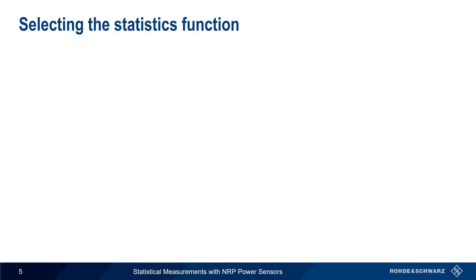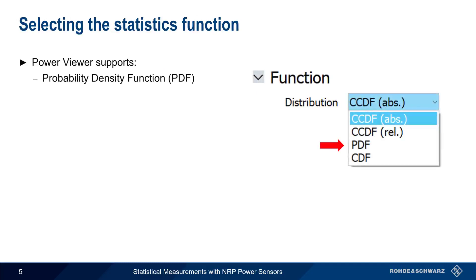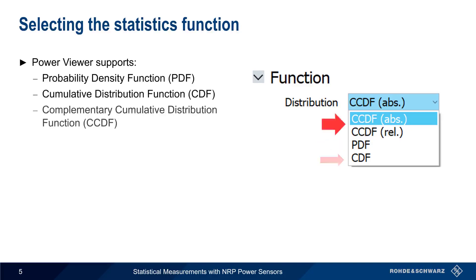PowerViewer supports three statistical functions: The Probability Density Function, or PDF, the Cumulative Distribution Function, or CDF, and the Complementary Cumulative Distribution Function, or CCDF. Again, please see the suggested viewing videos for an explanation of these different functions.